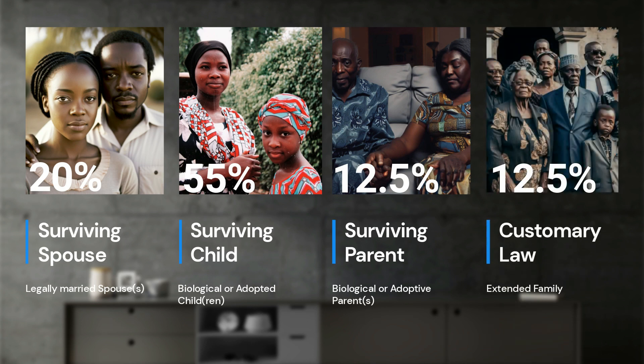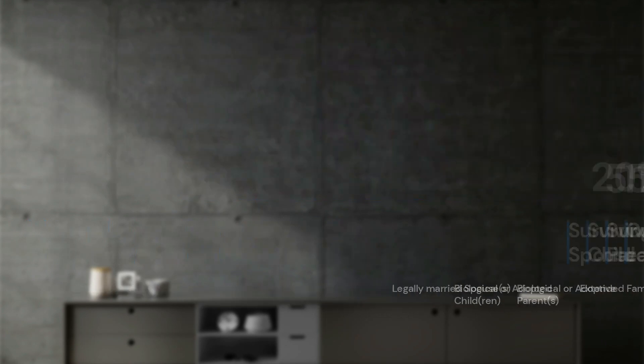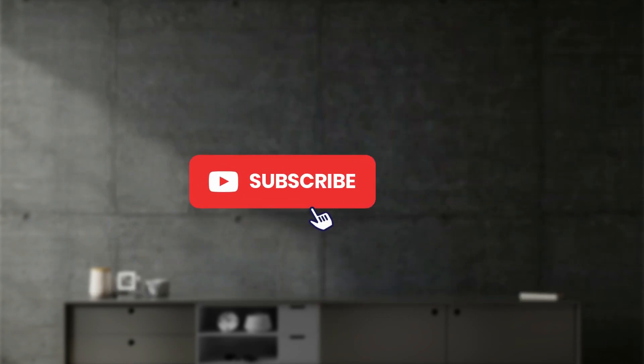If the deceased had more than one legally married spouse, then all the spouses will share the 20%. In the same way, if the deceased had more than one biological or adopted child, then all the children will share the 55%.